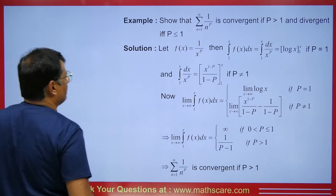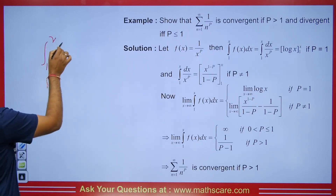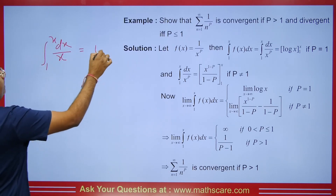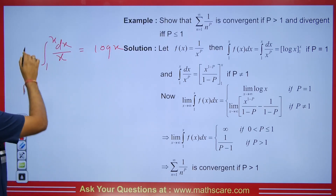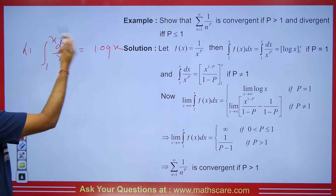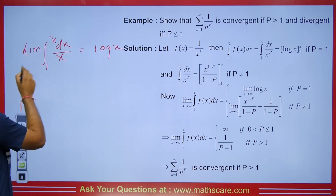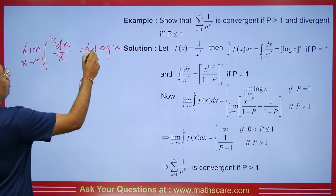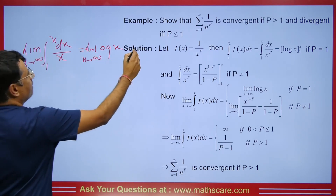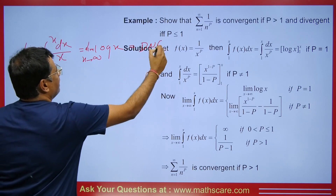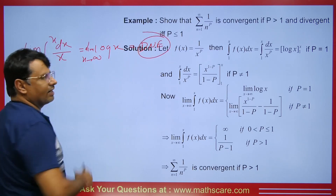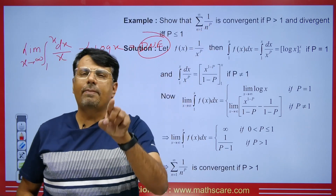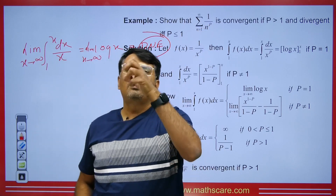When we calculate the value at p=1, we get log x, which is log x minus log 1. If I take the limit as x tends to infinity, we will get 'does not exist.' Therefore, this means that when p=1, the series will be divergent.